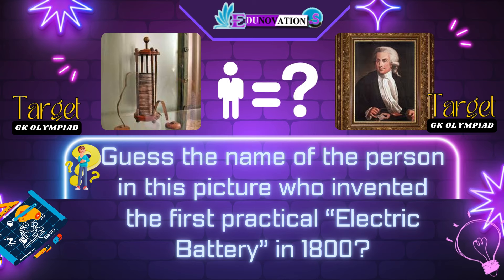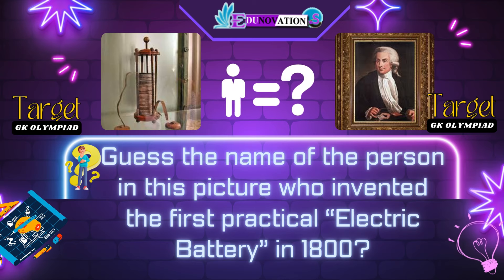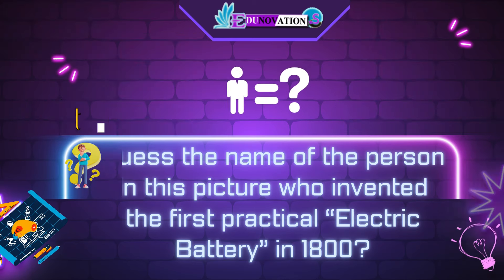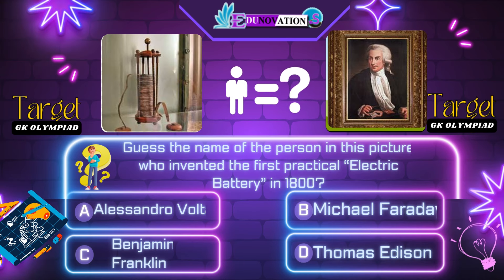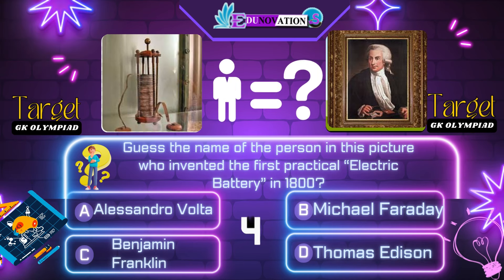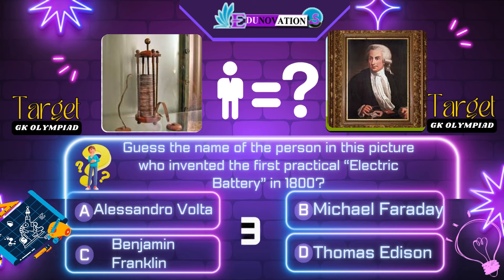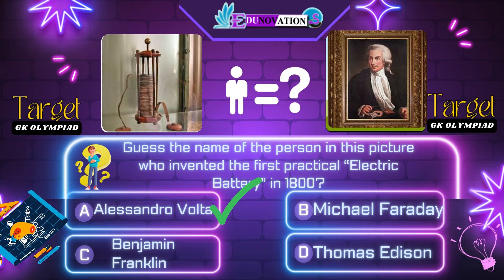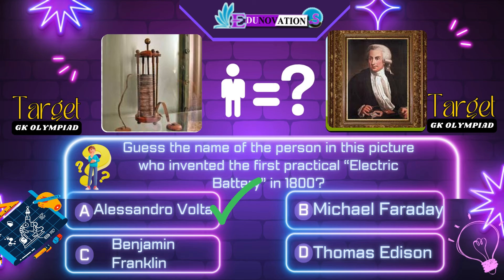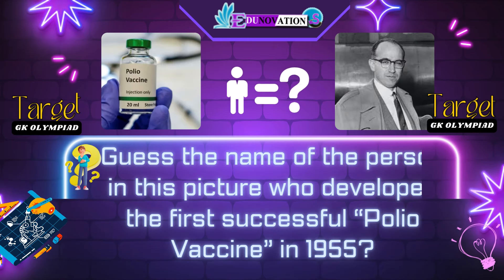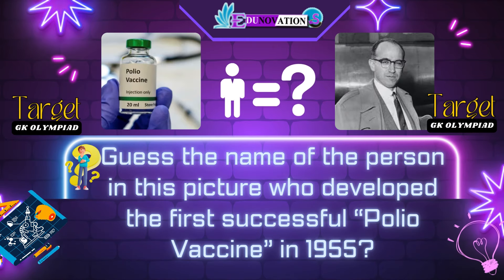Next question. Guess the name of the person in this picture who invented the first practical electric battery in 1800. Your options are: A. Alessandro Volta, B. Michael Faraday, C. Benjamin Franklin, D. Thomas Edison. Time's up. Correct answer is A. Alessandro Volta.